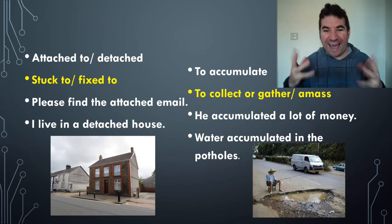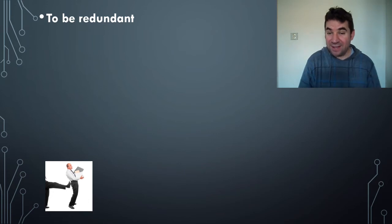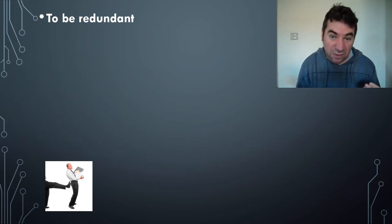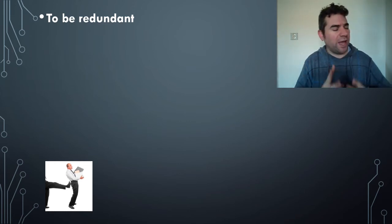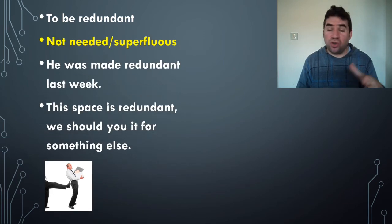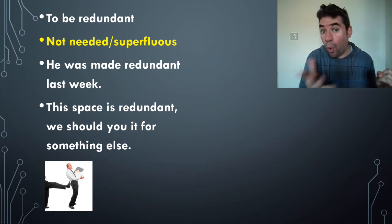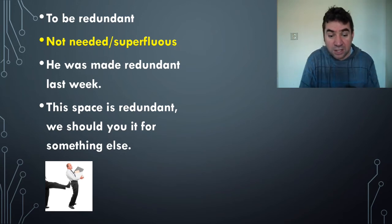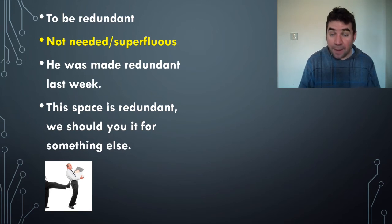Potholes are the holes in a road. To be redundant — if something is redundant, it's not used. We use this in several ways. If you are made redundant, your boss is letting you go — you're being fired, sacked, your contract terminated. We also use it for a space: 'this space is redundant' means it's not being used effectively. Examples: he was made redundant last week — lost his job; this space is redundant, we should use it for something else.